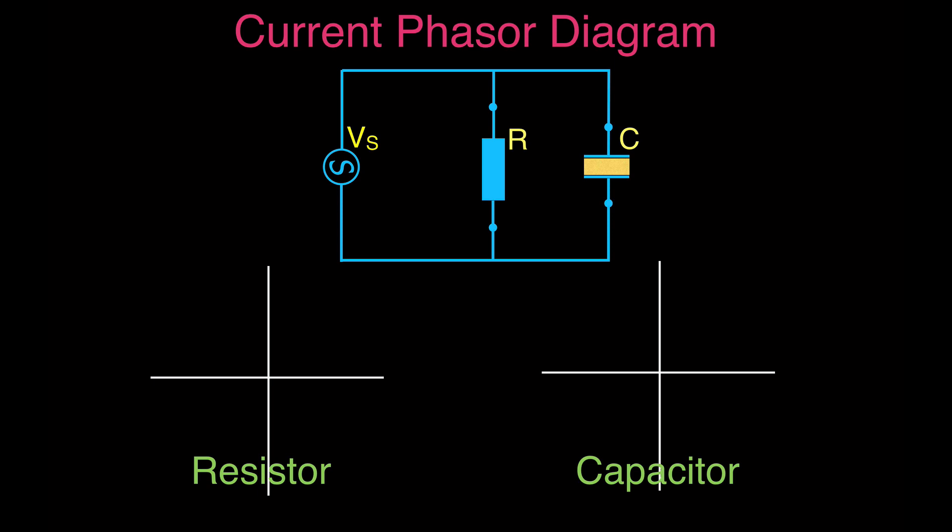RC parallel with an alternating voltage source. We're first going to start off with the current phasor diagram and how we calculate the total current through the circuit. For parallel circuits, the voltage is going to be our reference because the voltage across each branch is the same — unlike series circuits where the current is the reference. So we draw the voltage along the positive x-axis, then draw in the phasor vectors for the current.